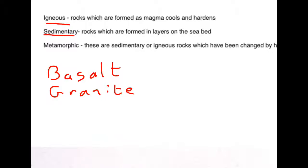The second rock type is sedimentary, and these are rocks which are formed in layers under the sea. The two examples of sedimentary rocks are limestone and sandstone.